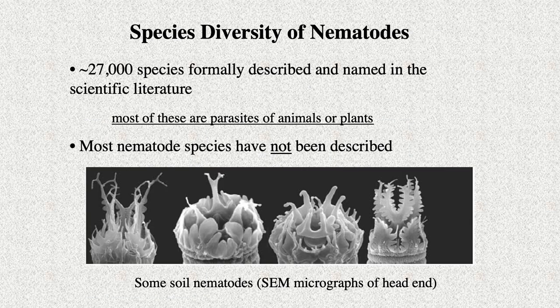How many species of nematodes are there? 27,000 species have been described by scientists, and most of these are parasites of animals or plants, because we want to know more about what is causing damage to our crops and to our animals — both companion animals and production animals. But most species of nematodes have never been described, and we find them all the time in the samples that we take. For example, this photograph shows head ends of nematodes we study in my lab, and species in this group can be found in soils everywhere, including right here in Davis.